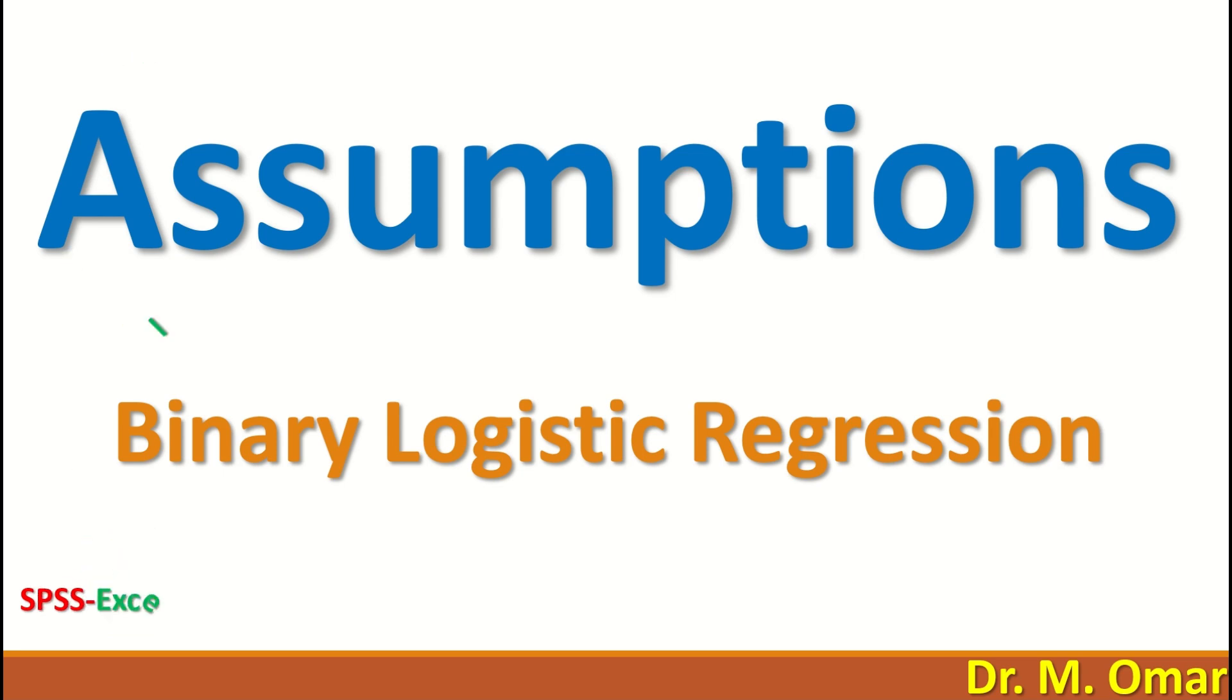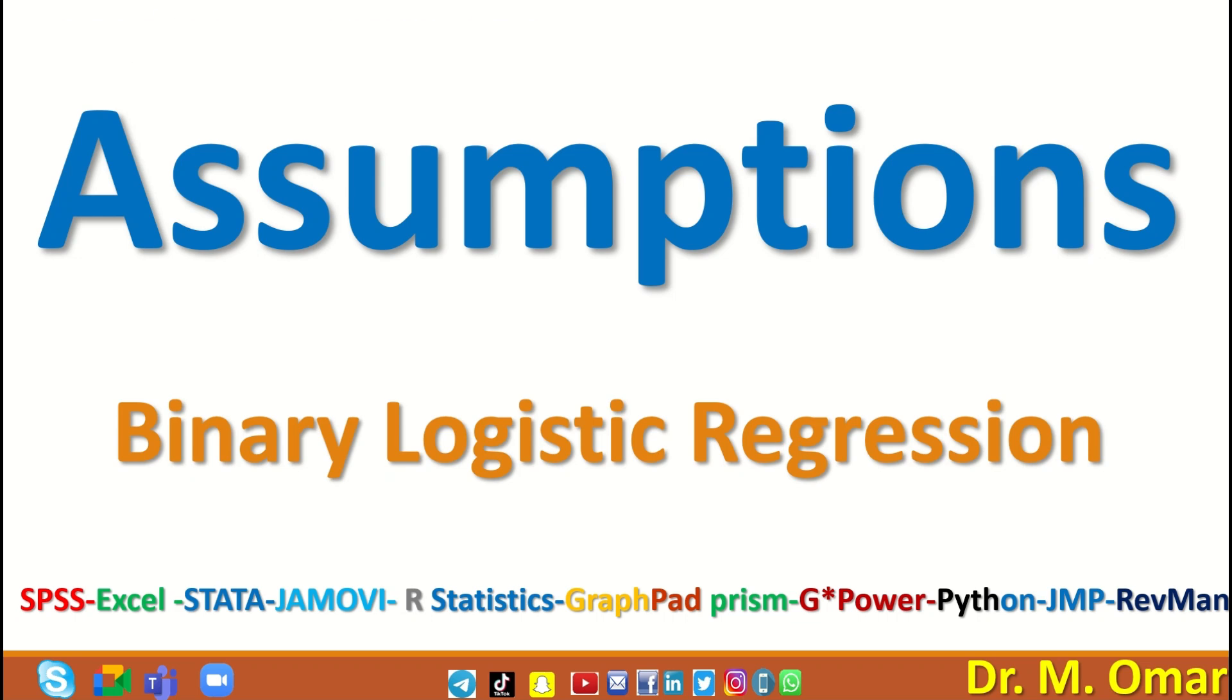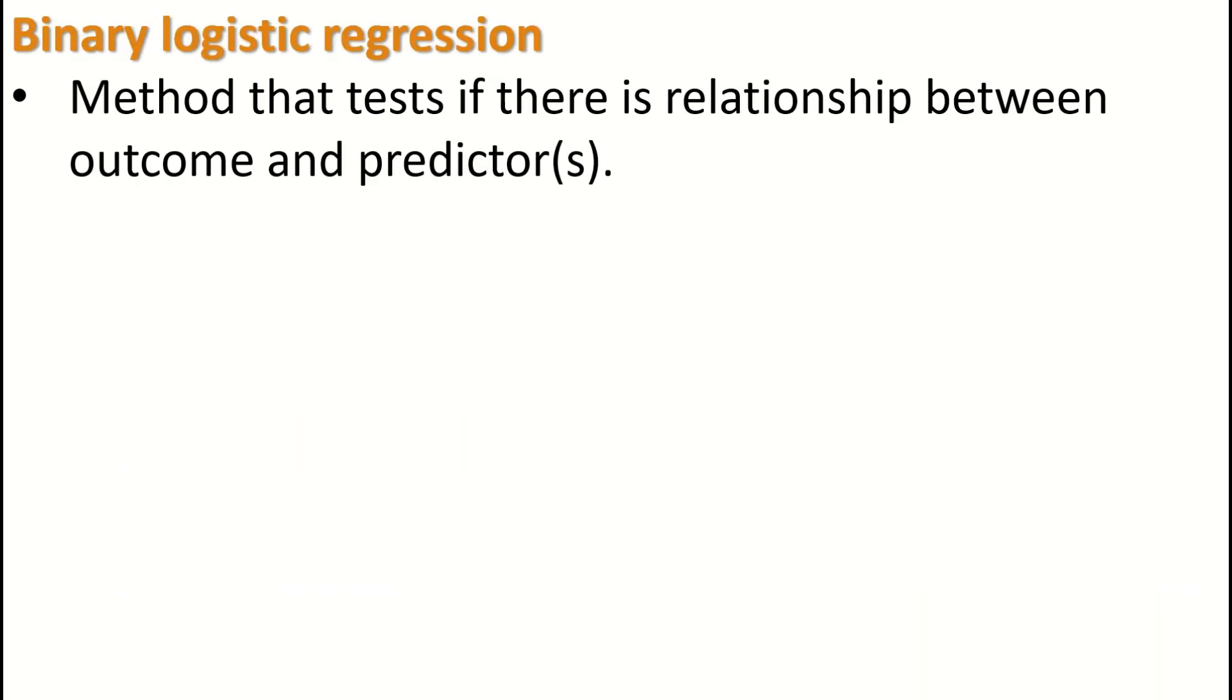Assumptions for binary logistic regression. Binary logistic regression is a statistical method or technique that examines if there is an association or relationship between two variables. One of the variables is called the outcome.